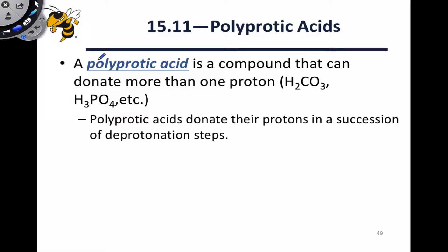A polyprotic acid is a compound that can donate more than one proton. Examples are carbonic acid, H2CO3, and phosphoric acid, H3PO4. The word polyprotic gives us a hint to the meaning: poly meaning many, and protic meaning protons. So polyprotic acids contain more than one proton that can be lost.